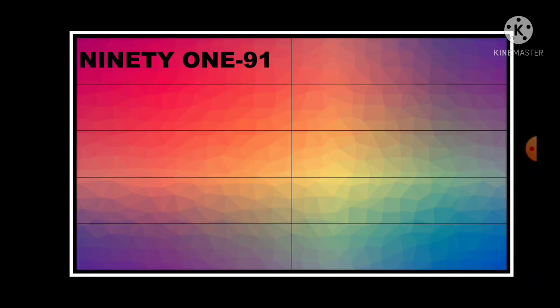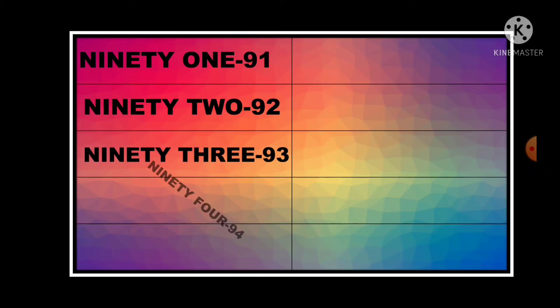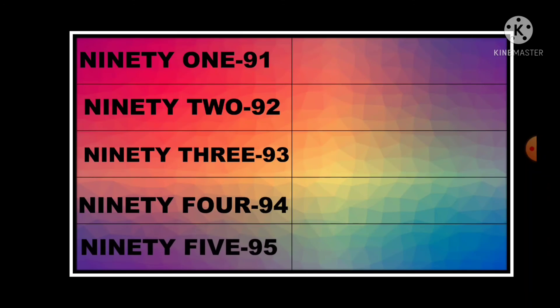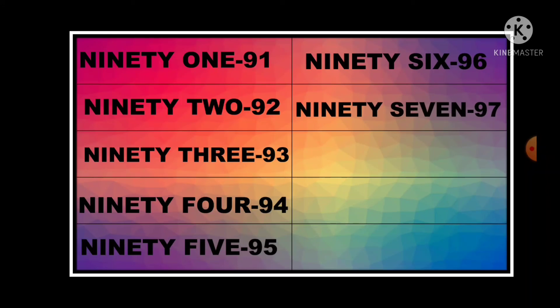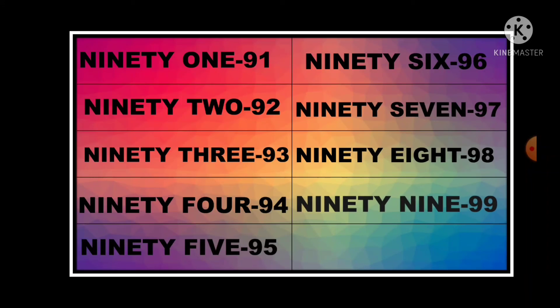Next, 91. Write 9 and just add T-Y: 92, 93, 94, 95, 96, 97, 98, 99, 100. 100 spelling: H-U-N-D-R-E-D, hundred.